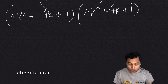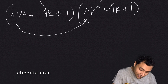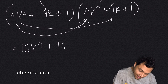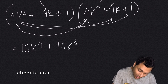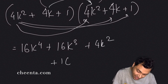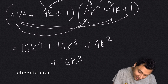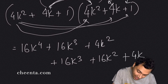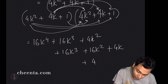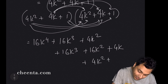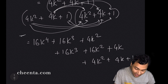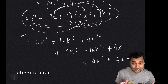Expanding (4k^2 + 4k + 1)^2 by direct multiplication: 4k^2 × 4k^2 = 16k^4; 4k^2 × 4k = 16k^3; 4k^2 × 1 = 4k^2; then 4k × 4k^2 = 16k^3; 4k × 4k = 16k^2; 4k × 1 = 4k; and finally 1 × 4k^2 = 4k^2; 1 × 4k = 4k; 1 × 1 = 1.